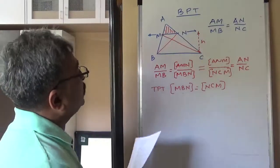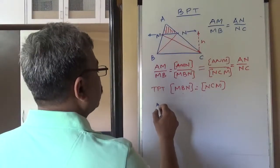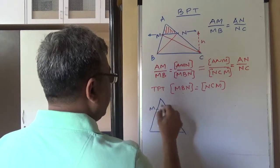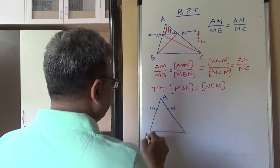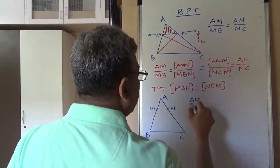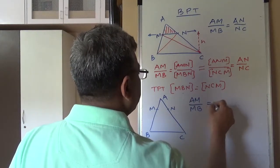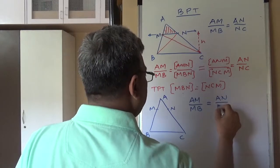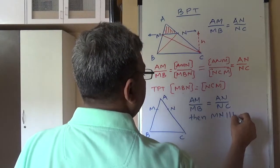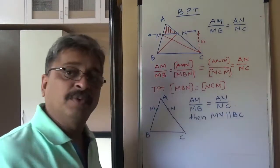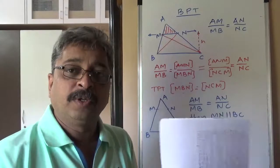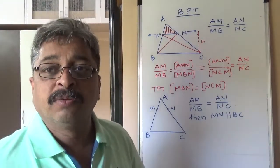Now, what would be the next result? Next result is, suppose, converse of basic proportionality. Suppose in a triangle, if point M and point N are such that AM upon MB is equal to AN upon NC, then MN parallel BC. This is converse. Suppose we have these ratios equal, then is the converse true? Now, having proved the original theorem, converse should be doable.